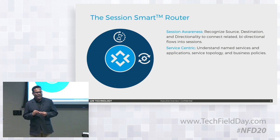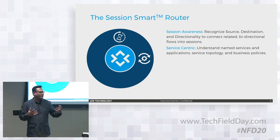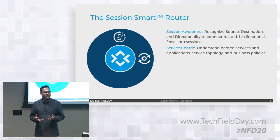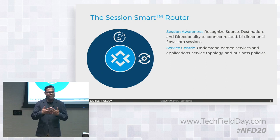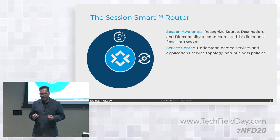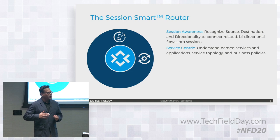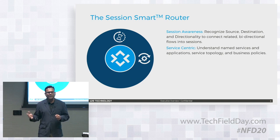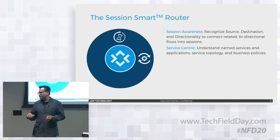We also have routing with words — we believe the network was developed to deliver services. You wanted people to connect to Facebook, so you developed the network for that. You should configure networks based on services. In our world, you configure based on services, and the entire network understands how to forward packets accordingly. The advantage: no need to worry about ACLs. Our policies are global — tenants and services — not per-router configurations.